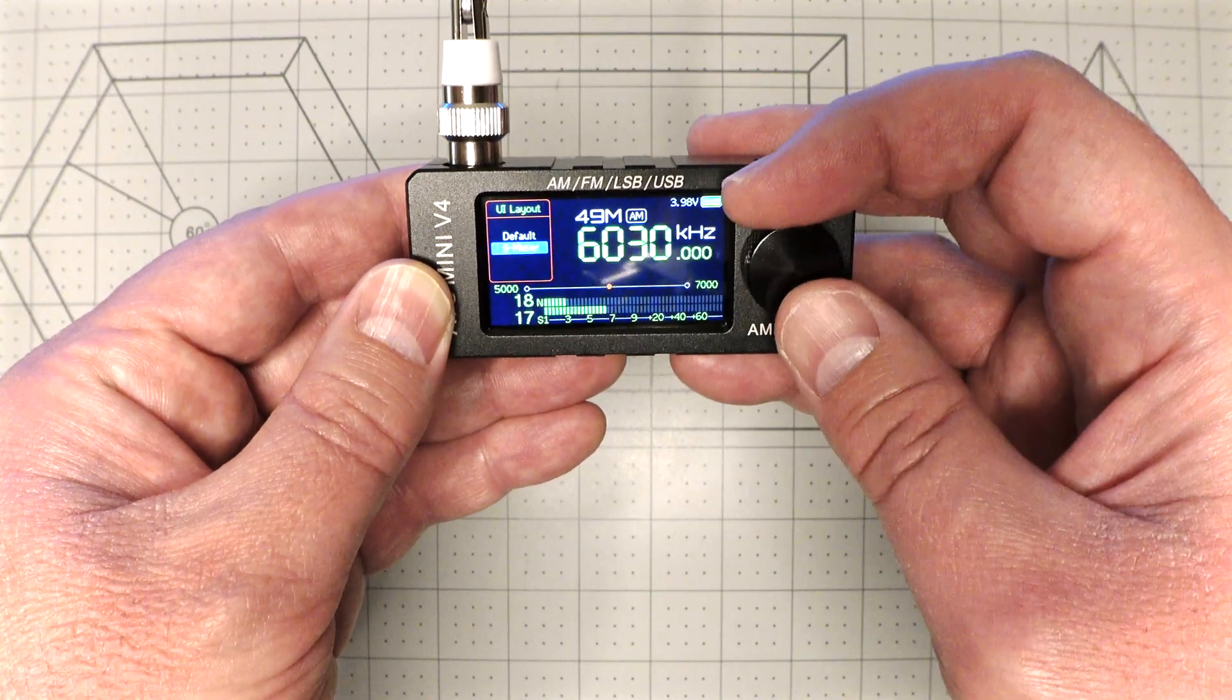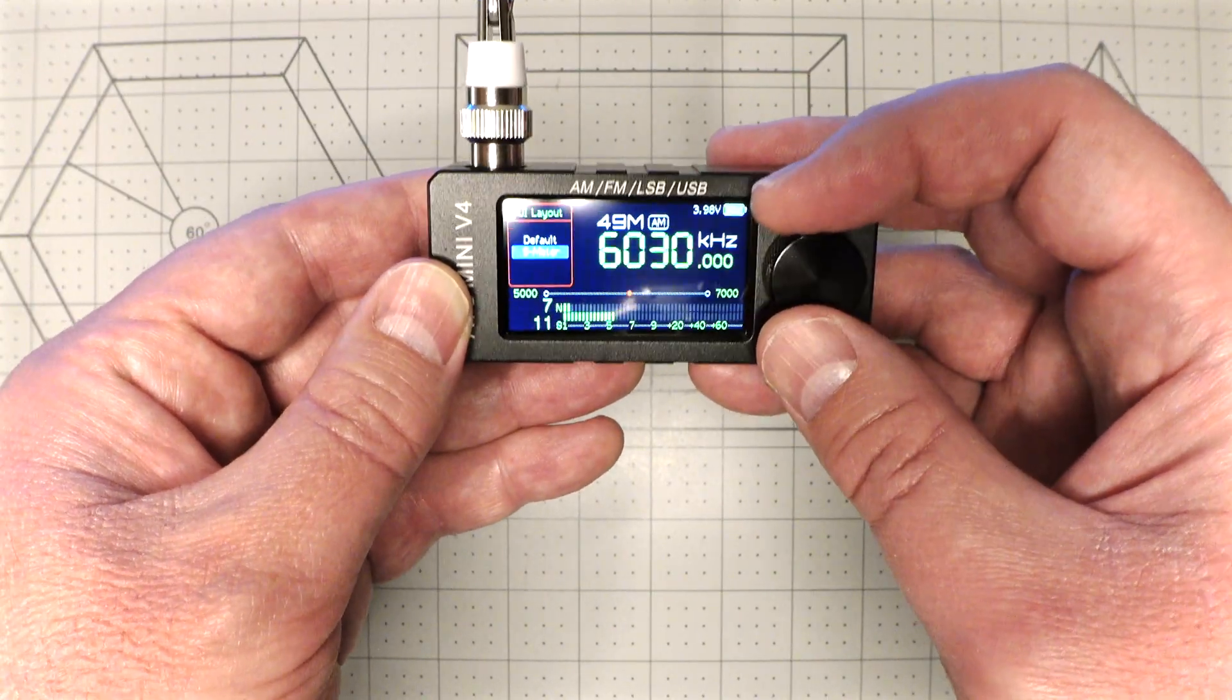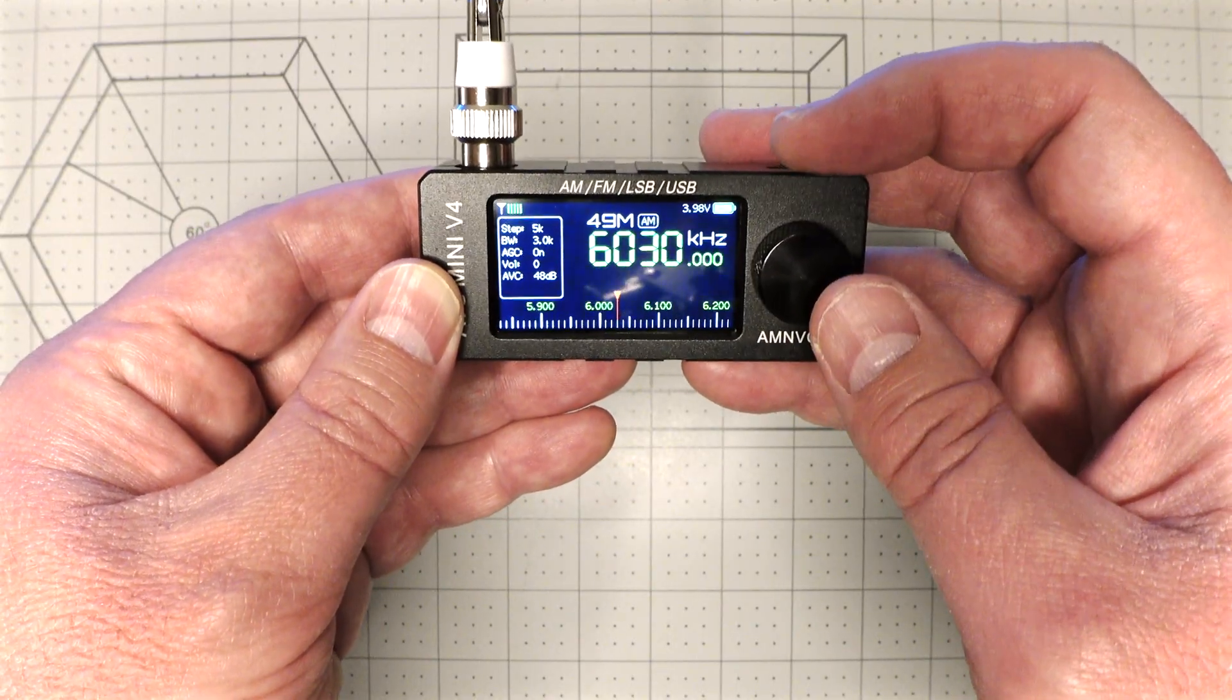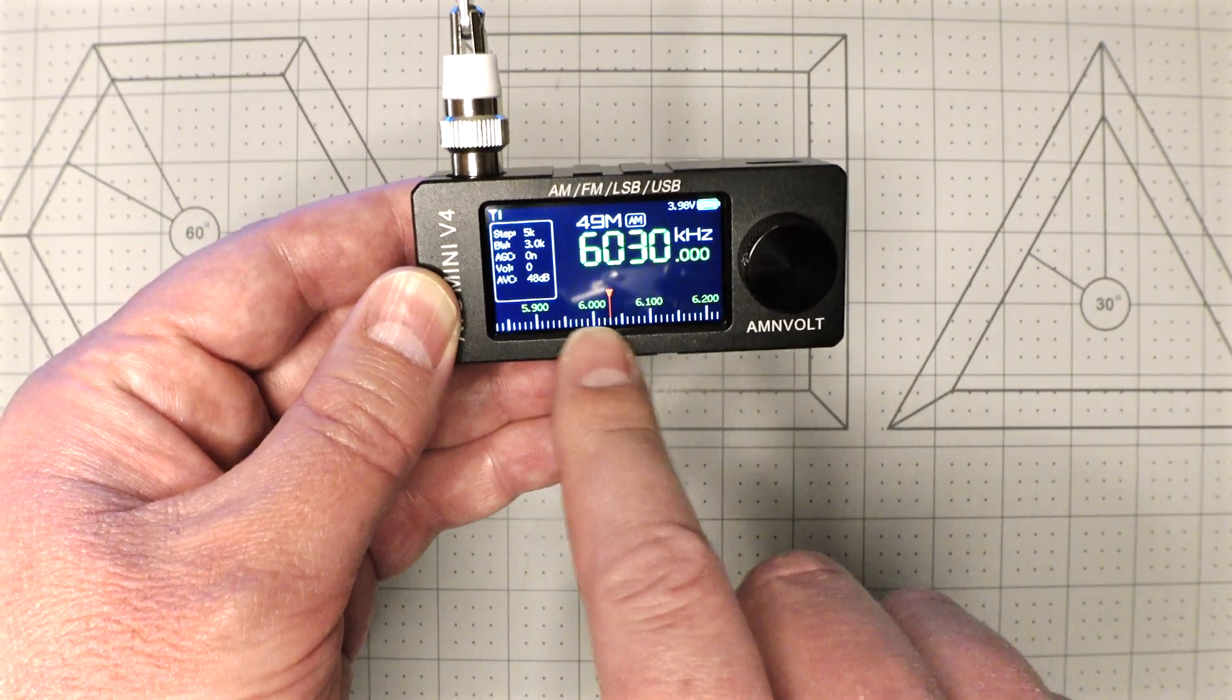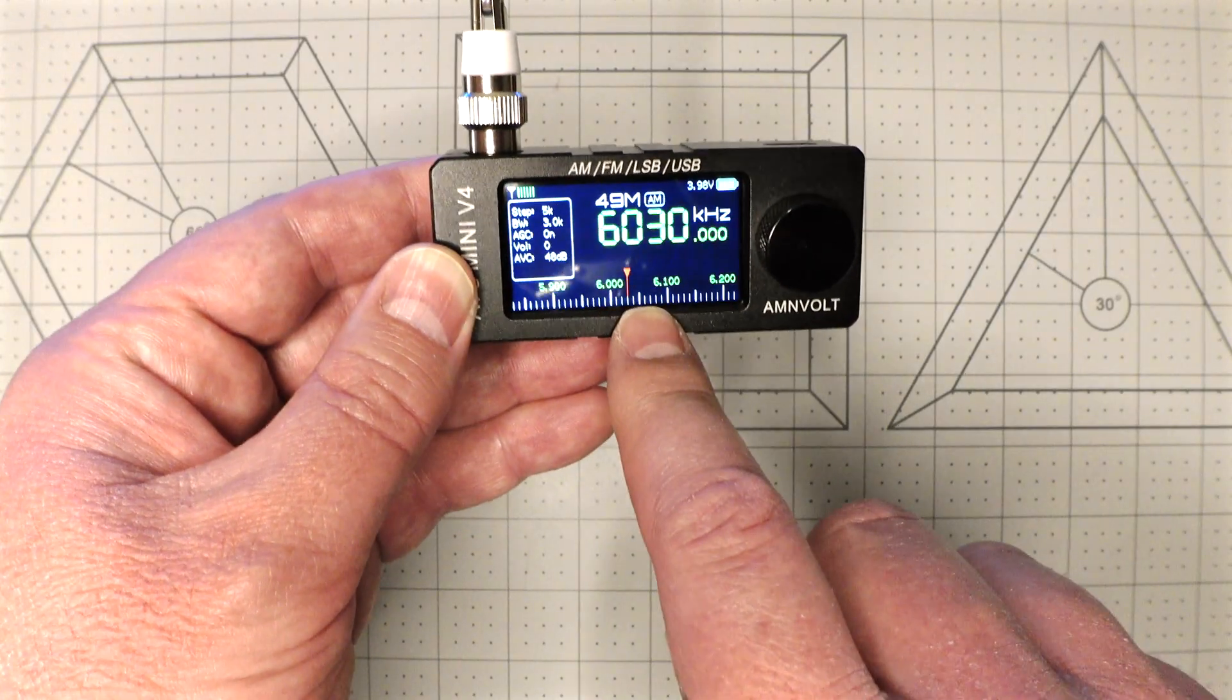Let me see here... UI layout. So right now I have it on the S meter but you can go to default and it shows you where you are within the spectrum at the moment.